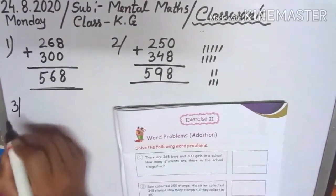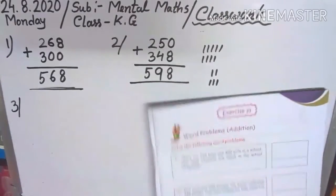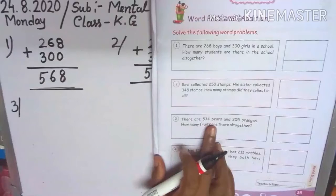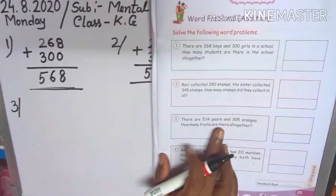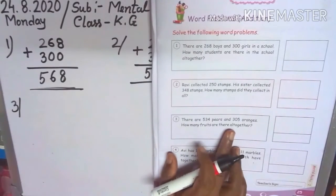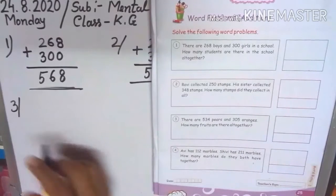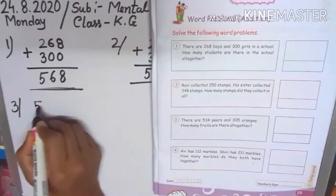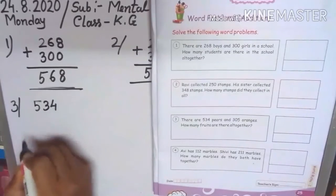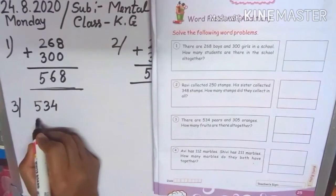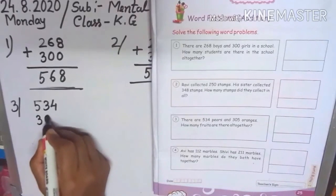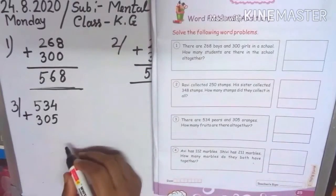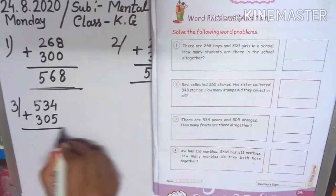There are 538 pears and 305 oranges. So write first 534 pears and 305 oranges. So how many fruits are there all together?